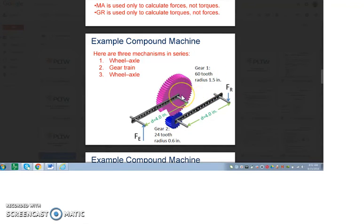So we can do a mechanical advantage of that. The effort distance is going to be 8 inches divided by a resistance distance of 3 inches. So the mechanical advantage from this first simple machine would be 8 over 3, which if you want to get an actual decimal number, I'm just going to leave it as 8 thirds for now.